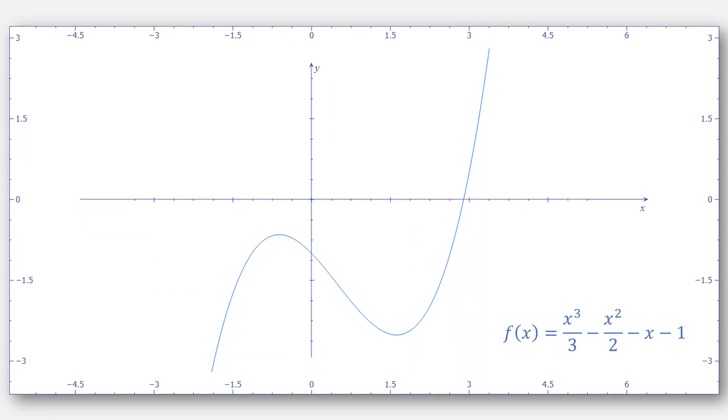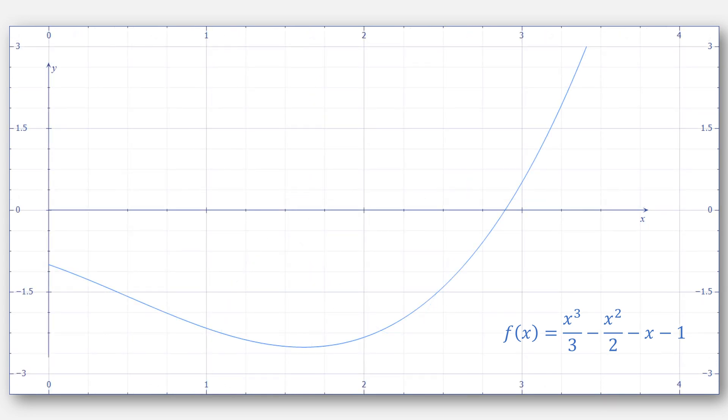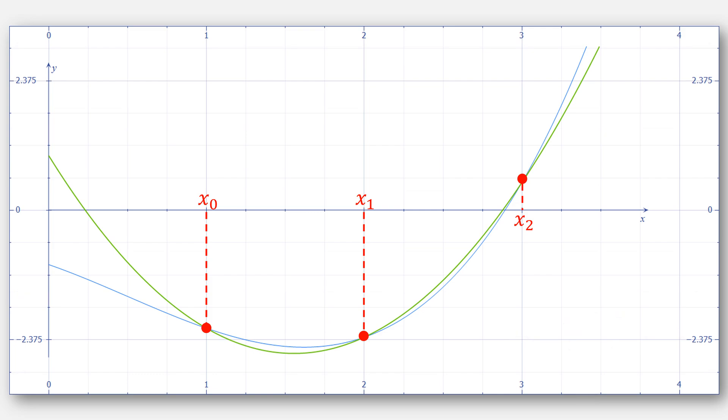Let's look back at our earlier example from x cubed over 3 minus x squared over 2 minus x minus 1. If we were to solve this using successive parabolic interpolation, we would need three starting points. And then compute the parabola that interpolates those three points.